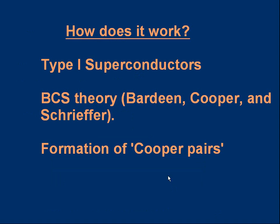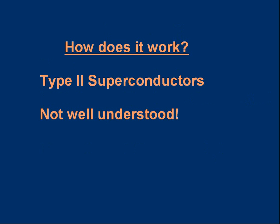How do superconductors work? It's a difficult question. There are two types of superconductor, referred to as type one and type two. Type one superconductors we think we understand pretty well — the theory is called the BCS theory, worked out by Bardeen, Cooper, and Schrieffer. The theory says that inside a superconductor, the electrons form pairs called Cooper pairs, and these pairs of electrons can move through the lattice without transferring energy to the lattice, so they can move without any resistance. There are also type two superconductors, which generally include the high temperature superconductors, and no one fully understands how they work — people are working on that right now.